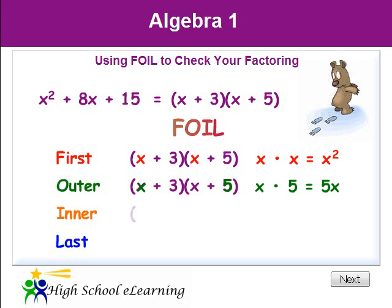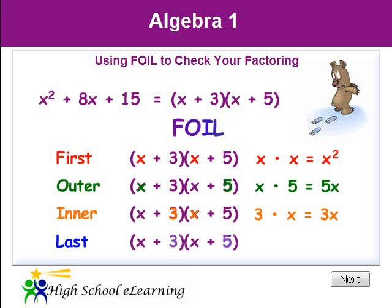Multiply the inner terms of the binomials: 3 times x equals 3x. Multiply the last terms of the binomials: 3 times 5 equals 15.